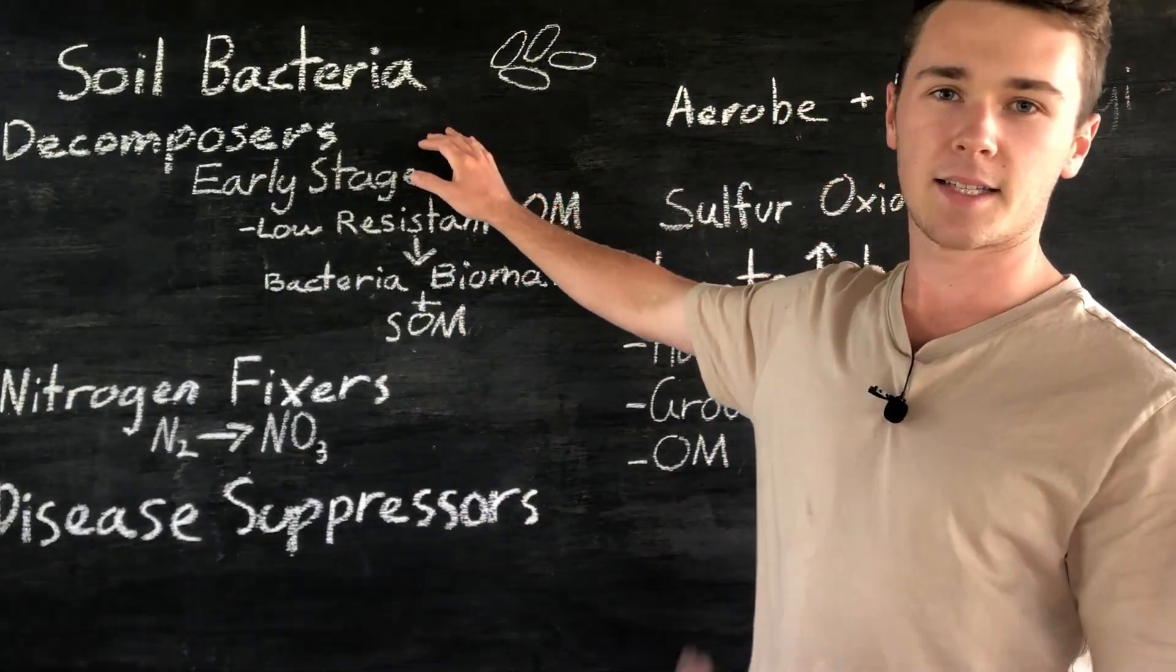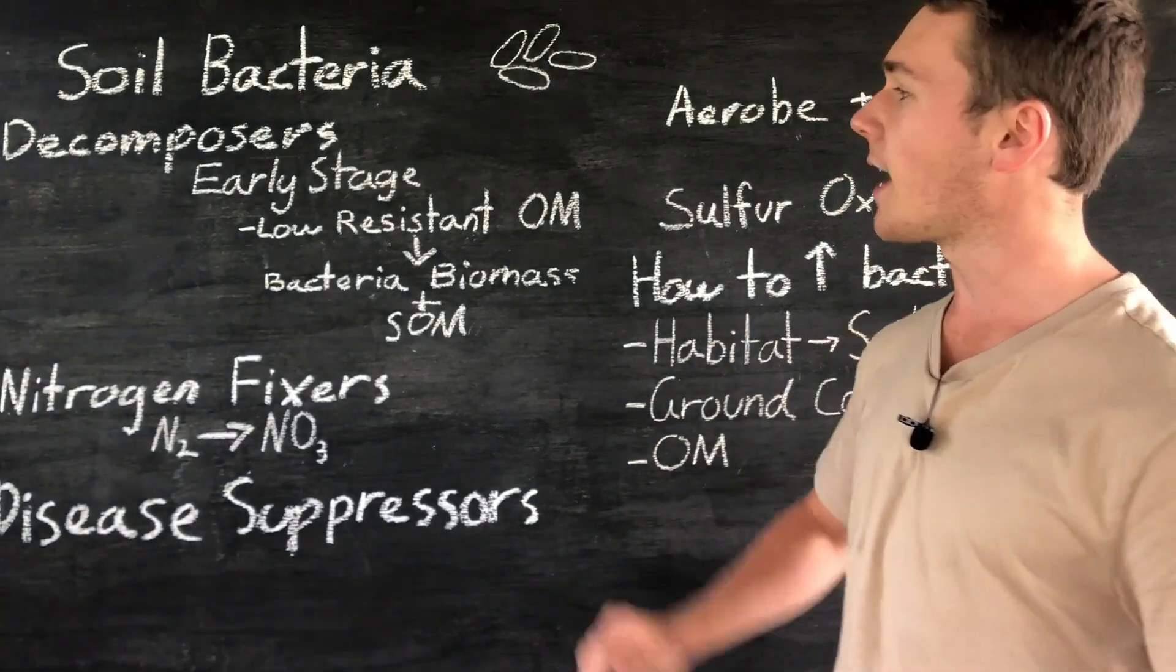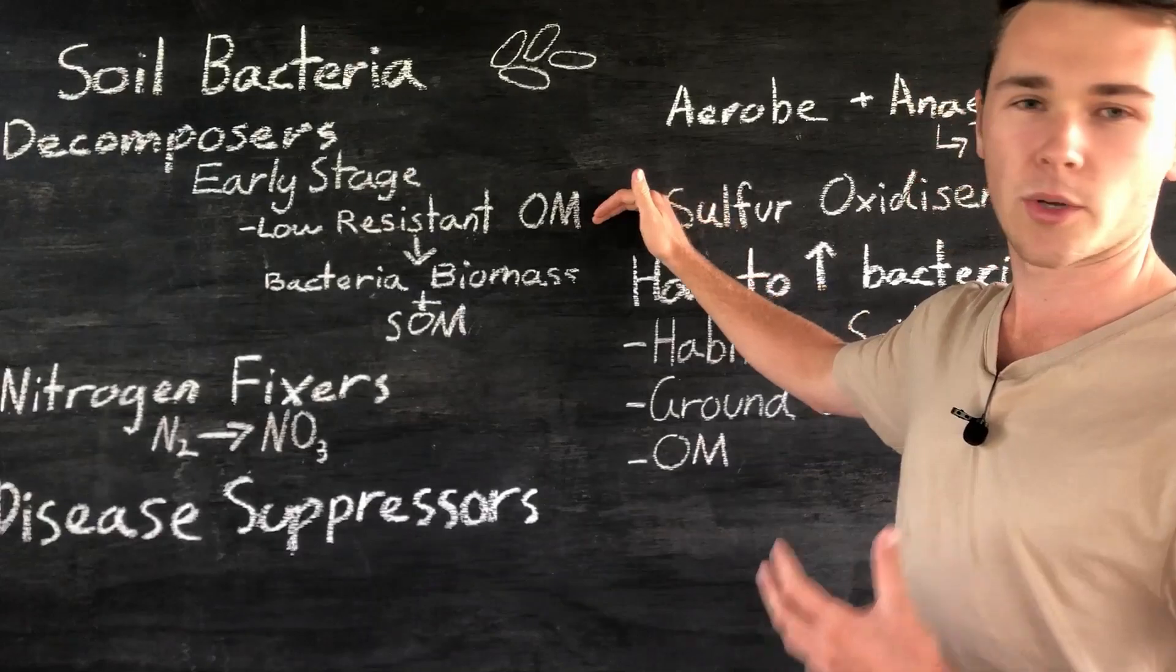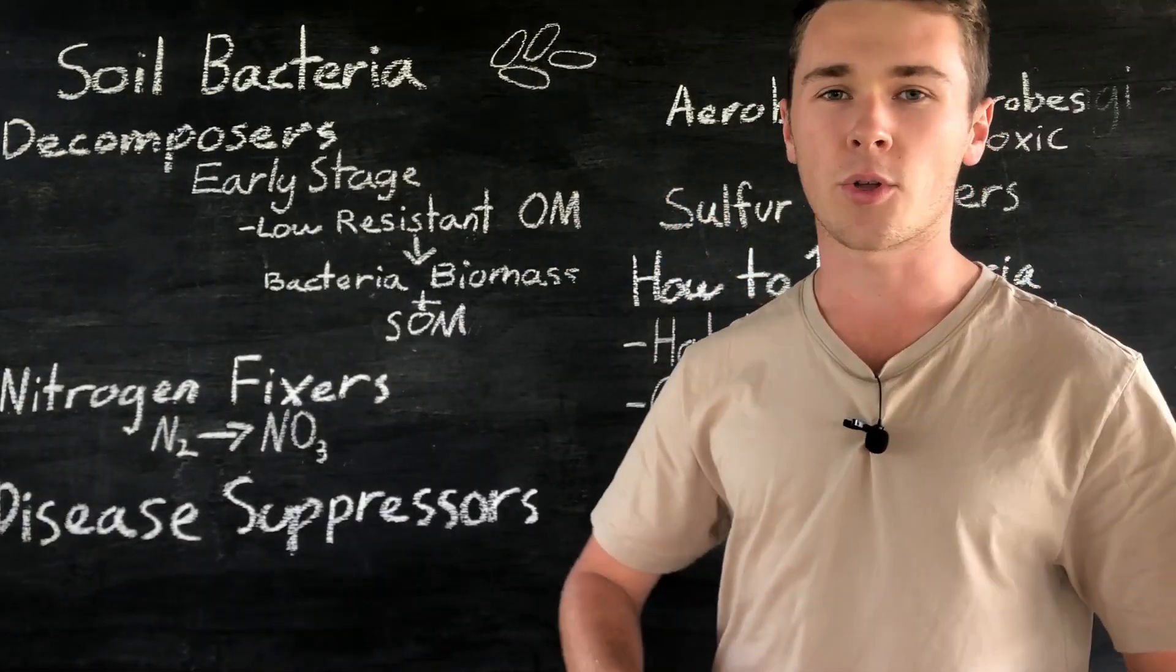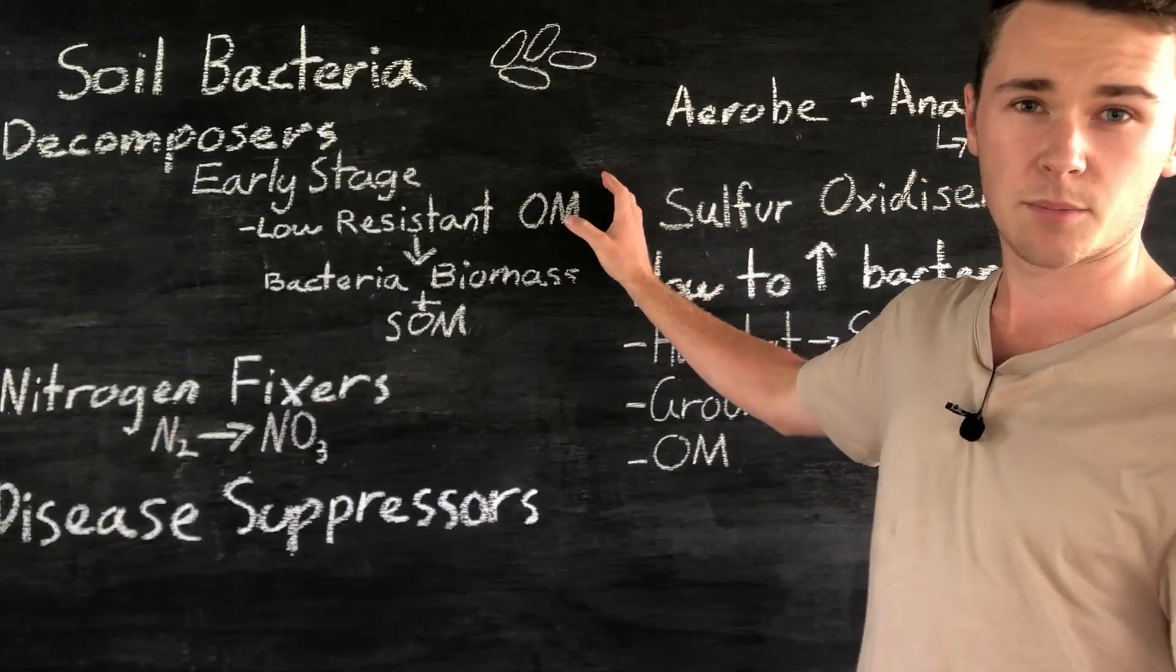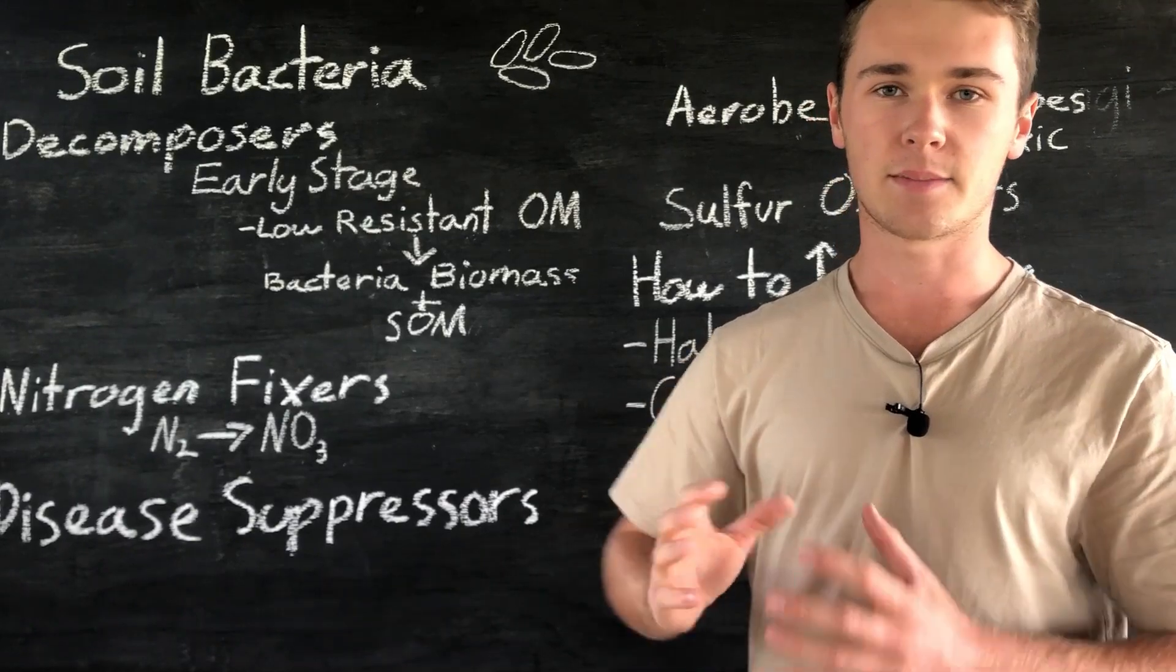The first one we'll talk about are decomposers. Now decomposing bacteria take place in the early stages of decomposition where there's quite low resistance organic matter. This includes most of our carbohydrates and simple sugars where it's quite easy for our bacteria to access and break down these molecules.